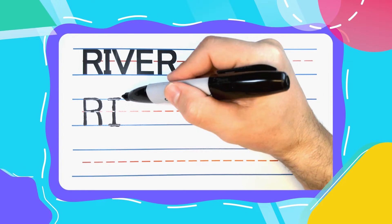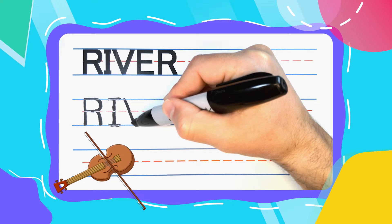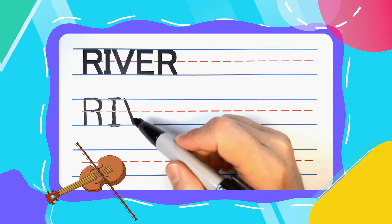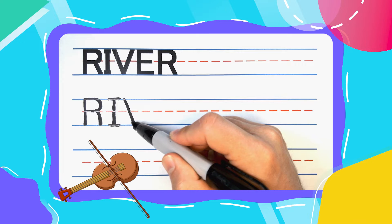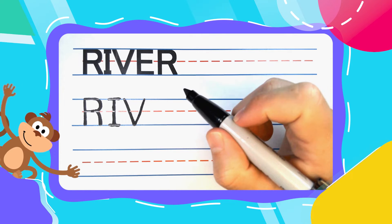The next letter in River is the very vivacious Violin V. Violin V's start with a diagonal line down. Keep your pen there, diagonal right back up to complete your V.